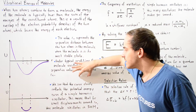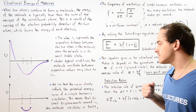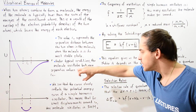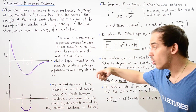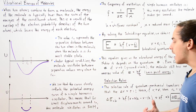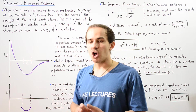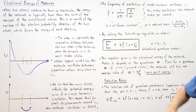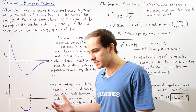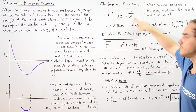This curve closely resembles the potential energy curve of simple harmonic oscillators, which means that for small displacements around R-naught, our molecule actually behaves as a simple harmonic oscillator. The frequency of oscillation of any simple harmonic oscillator is given by: F equals 1 divided by 2π multiplied by the square root of k divided by mu.